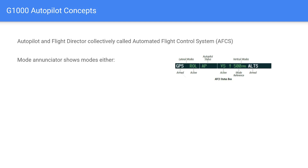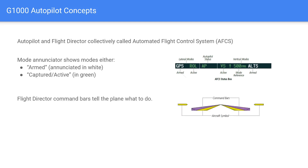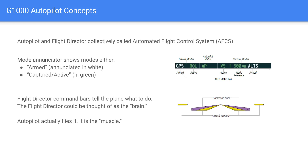There is a mode enunciator at the top of the PFD showing modes that are armed in white — like GPS/nav mode armed and alt select armed — or captured/active in green, such as roll mode and vertical speed mode. There are really two parts to the autopilot: the flight director, which tells the pilot what to do via magenta command bars, and the autopilot, which is the muscle. When you engage the autopilot, it does what the flight director commands.